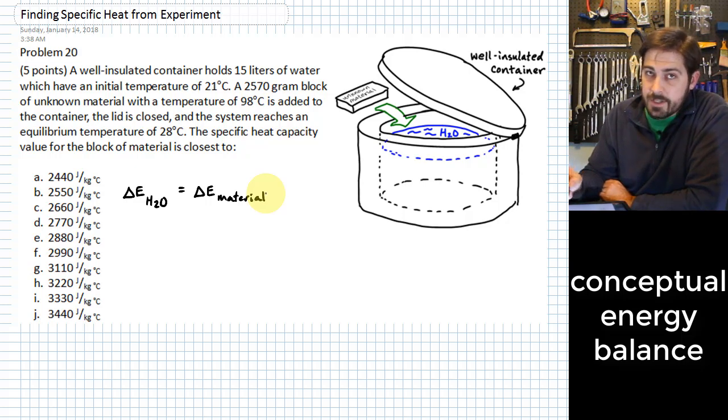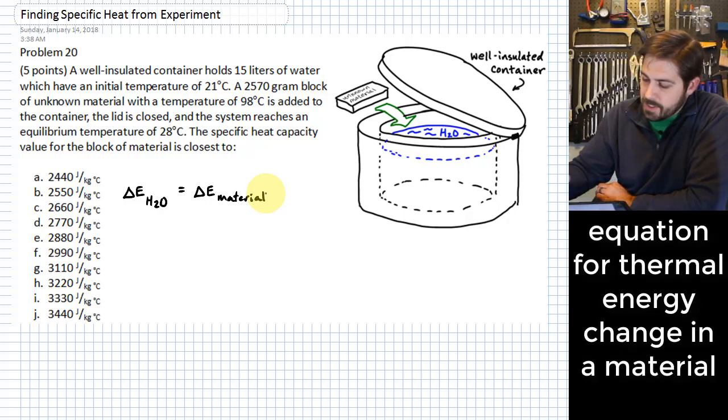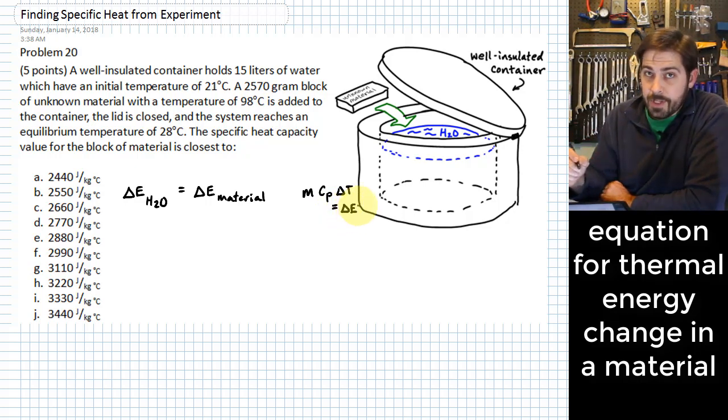So the basic equation that we use with all of these is that we have mass times the specific heat capacity times ΔT equals the change in the amount of thermal energy. This is what we're going to use on this problem as well.